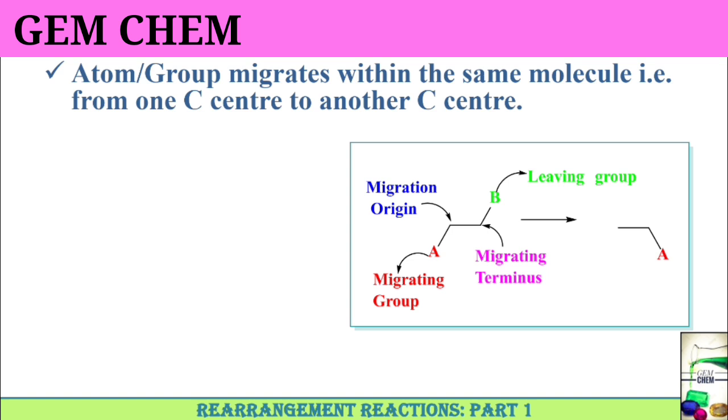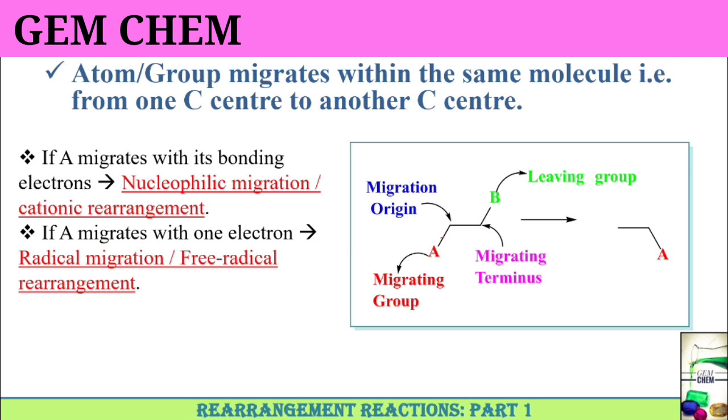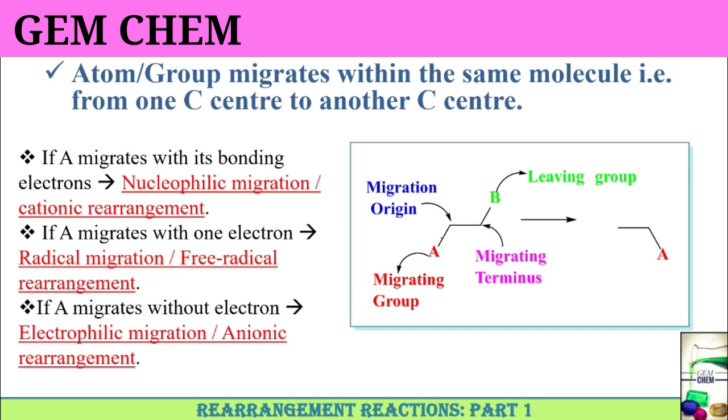The migration can be of three types. First, when A traverses with all of its bonding pair electrons, that is the two electrons are being transferred, we can say it as nucleophilic migration or cationic rearrangement. If it migrates with only one of the electrons present in this bond, then this is radical migration or free radical rearrangement. Finally, if it migrates without any electron, then it is electrophilic migration or anionic rearrangement.